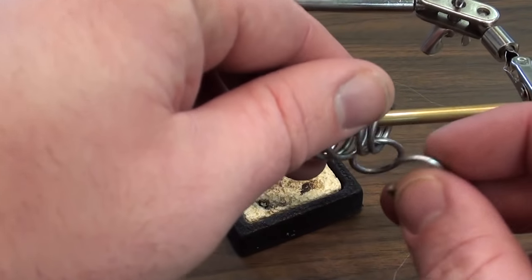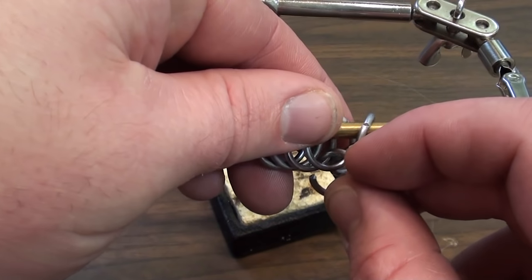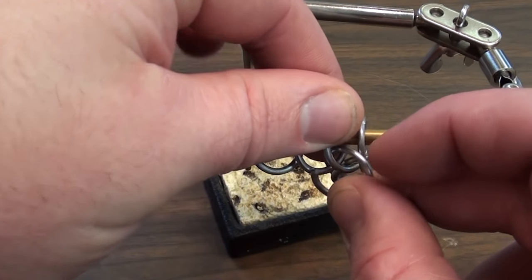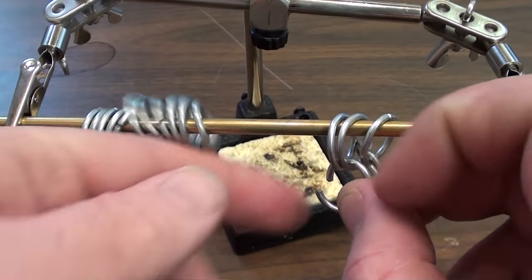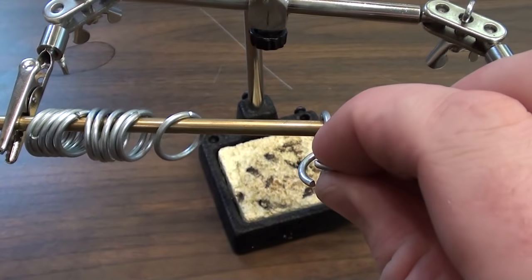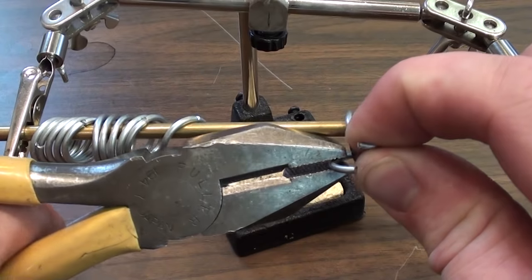You take your next ring and it goes through one ring that has the other ring through it and then a new ring. So you're always going through two rings.